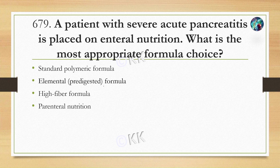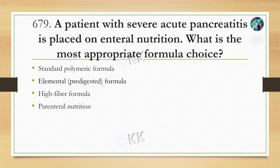A patient with severe acute pancreatitis is placed on enteral nutrition. What is the most appropriate formula choice? Option A, standard polymeric formula. Option B, elemental pre-digested formula. Option C, high fiber formula. Option D, parenteral nutrition। Correct option है elemental pre-digested formula, जिसमें hydrolyzed protein, medium-chain triglycerides और easily digestible carbohydrates होते हैं। Parenteral nutrition generally enteral feeding fail होने के बाद ही दिया जाता है, क्योंकि उससे infection का risk ज़्यादा रहता है।